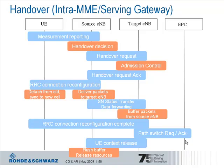So this would be the handover decision. In case this neighboring cell belongs to another base station we have an inter base station handover. And the source base station will then communicate with the target via the X2 interface.